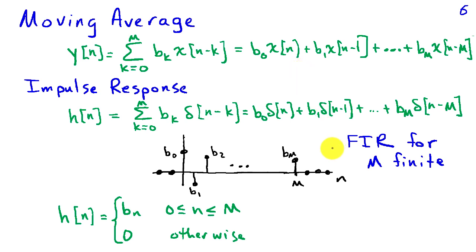And the values of the impulse response are given by these moving average coefficients for n between 0 and m, and the impulse response is 0 otherwise. So the moving average system, it's very easy to convert from the coefficients to the impulse response. And similarly, one can go the other way. If you're given a finite duration impulse response, then you obtain a moving average representation for a system with that impulse response by setting the coefficients, the b's, to be equal to the non-zero values of the impulse response.